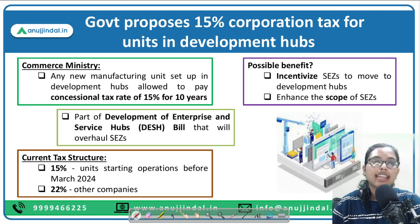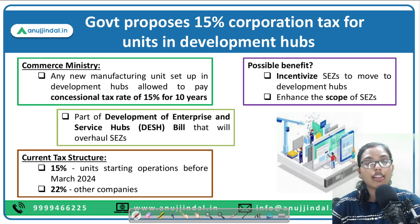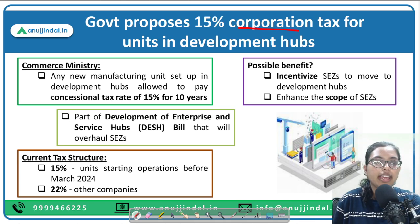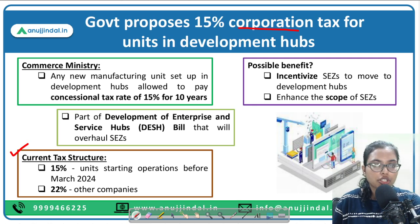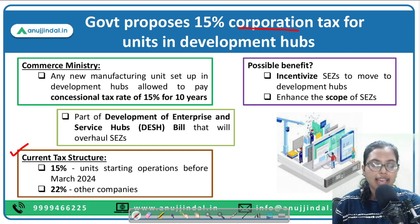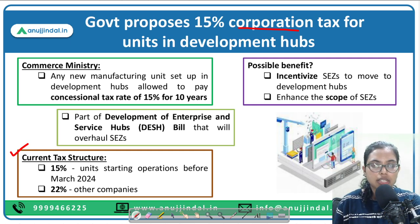The government has proposed a 15 percent corporation tax for units in development hubs. What is the current tax structure? Corporation tax is any tax levied on corporates operating in India. The current structure is either 15 percent or 22 percent.